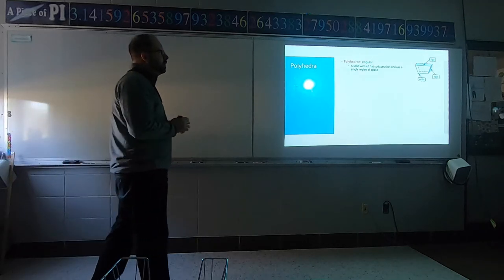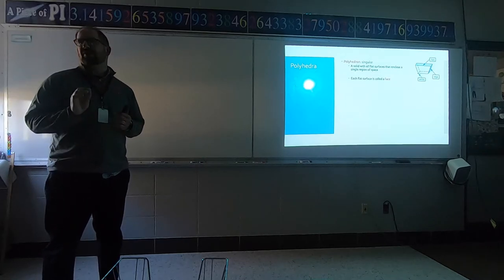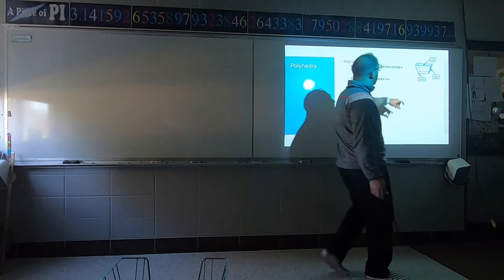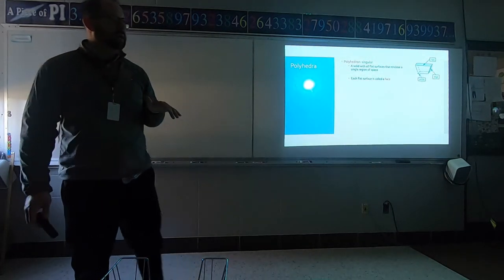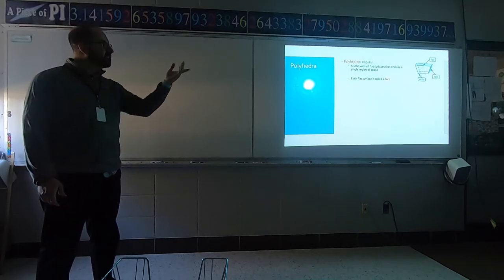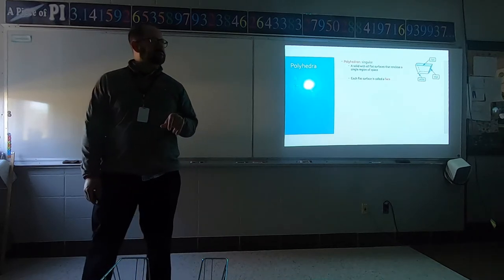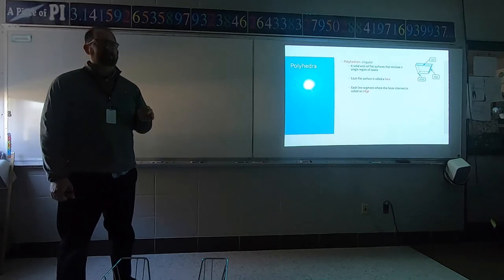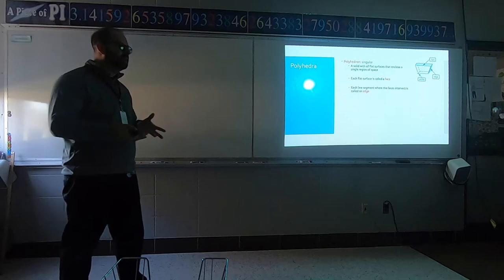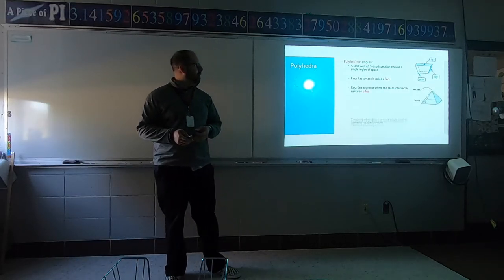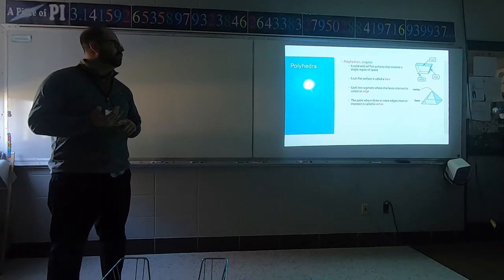Let's go through the parts. The faces are the flat surfaces — they're polygons. For example, a trapezoid could be a face; it's a flat polygon. The edges are the line segments that make up the walls — they intersect in corners. The corners where those edges meet to form the polygons are called vertices, or a vertex in singular form. A vertex on a polyhedron requires three or more segments coming together.